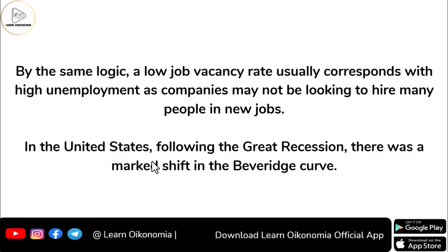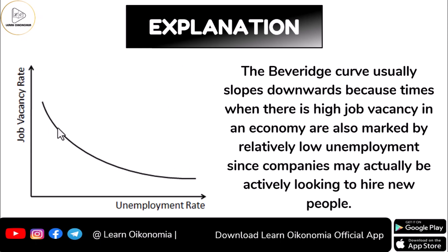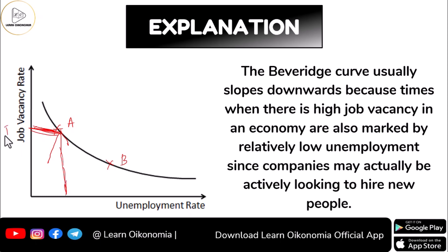For the graphical explanation, let's take two points on the Beveridge curve: point A and point B. At point A, there is a corresponding job vacancy rate — let it be j0 — and a corresponding unemployment rate — let it be u0. At point B, the job vacancy rate is j1 and the unemployment rate is u1.